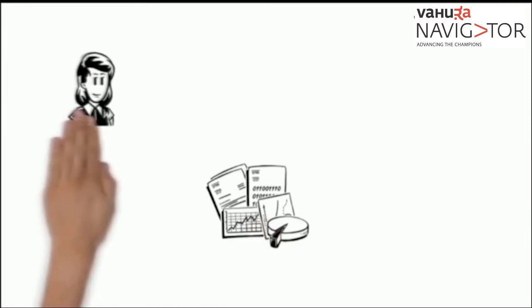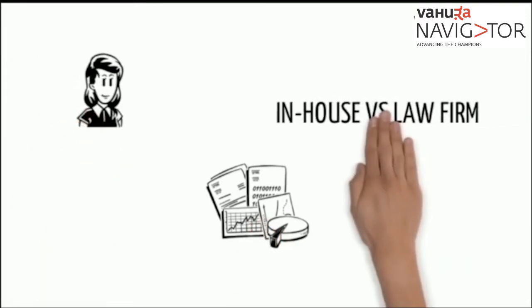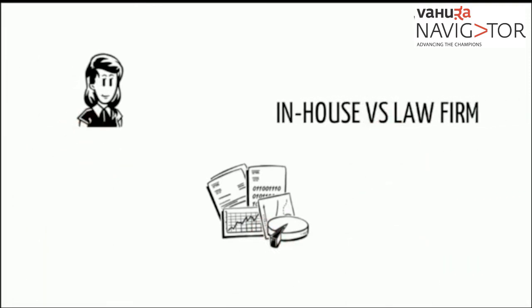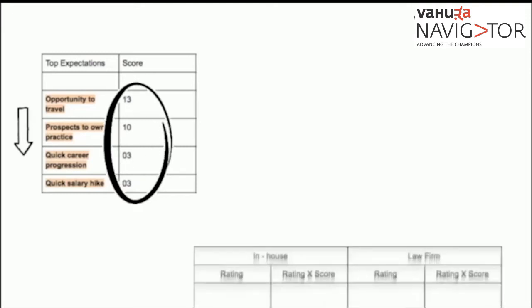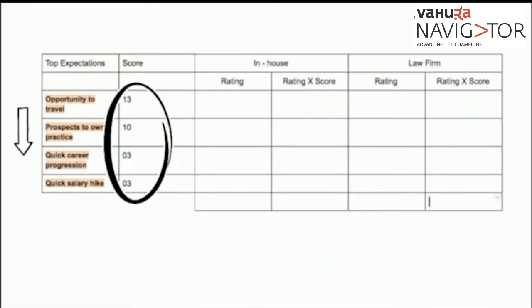The first step is for Reshma to write her top four expectations in the left column. Now Reshma has to mention the scores from the previous exercise. She then has to mention the career options in the top row. It is important that Reshma has collected enough information on each of the career options to be able to rate them.